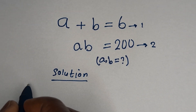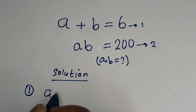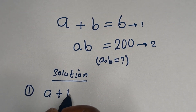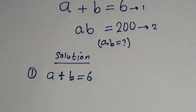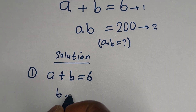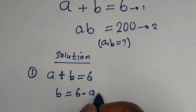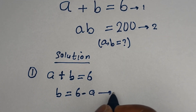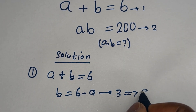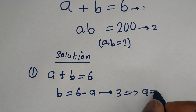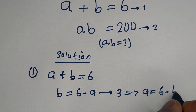Now from equation 1, A plus B is equal to 6, so B is equal to 6 minus A — let us call this equation 3. We may also say A is equal to 6 minus B.